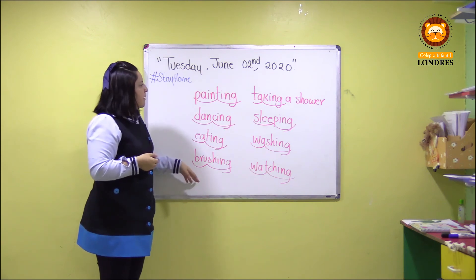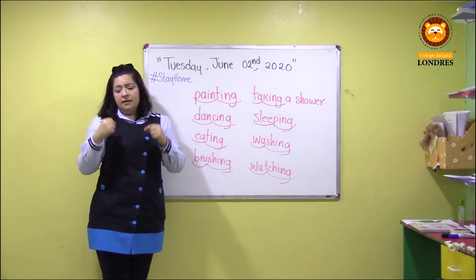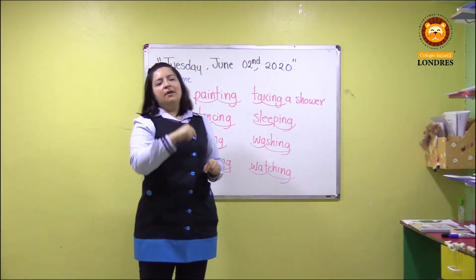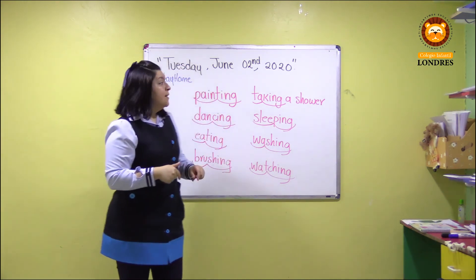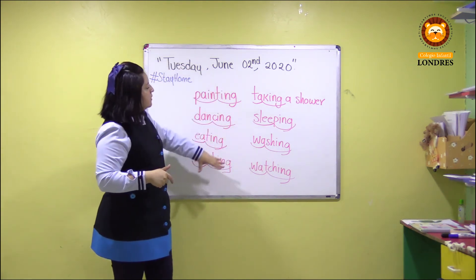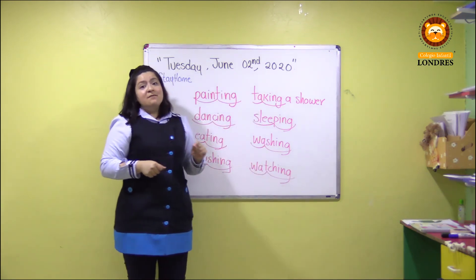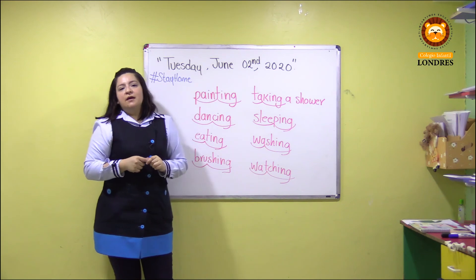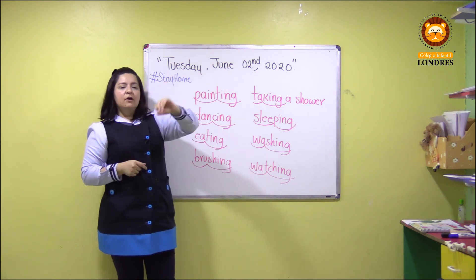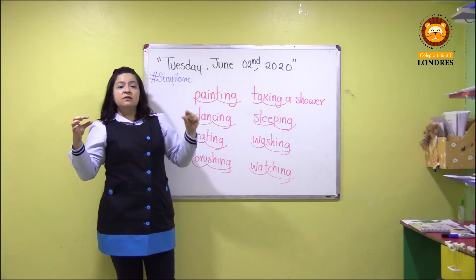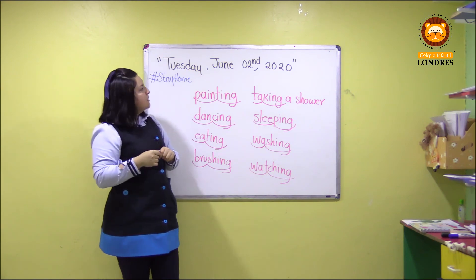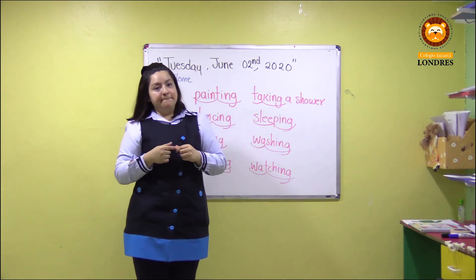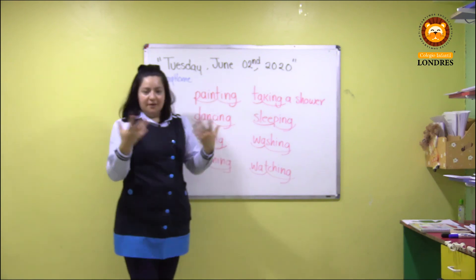¿Va que va? Se van a quedar con la actividad del día de hoy. Recuerden: página 86, utilizo el recortable de la unidad número 9. Identifico mis verbos en mi libreta. Coloco fecha completa porque los chicos de tercero ya estructuran con toda su fecha de inglés. Recuerden que hoy es martes 2 de junio del 2020. ¿No se les olvida? Perfecto.